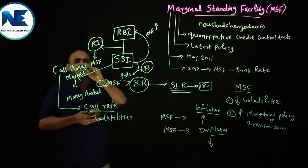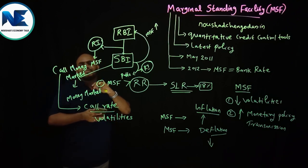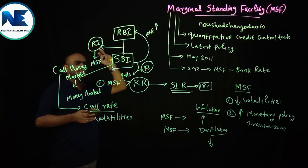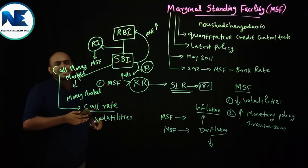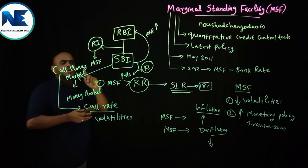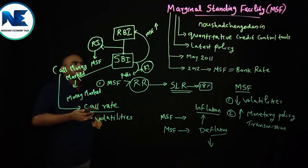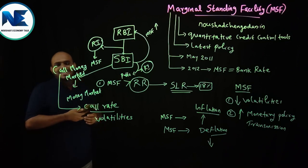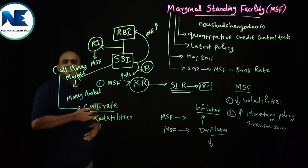Now we can wind up the session. Please visit naushatchengodan.in and check your knowledge by attempting multiple choice questions. You can also forward your marks to my website. Note the historical dates: Repo Rate was introduced in 1992, Reverse Repo Rate in 1996, and MSF in 2011. You can also refer to the bi-monthly monetary policy assessment for deeper understanding. In the coming video, I would like to discuss another very interesting topic — Marginal Cost of Funds Based Lending Rate, that is MCLR. Thanks for watching, please subscribe and share. All the best.